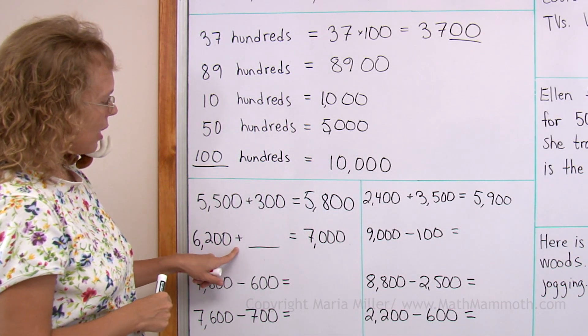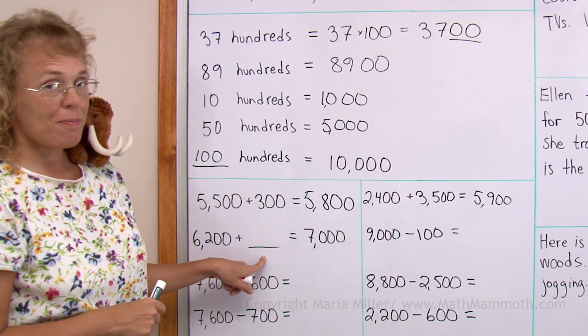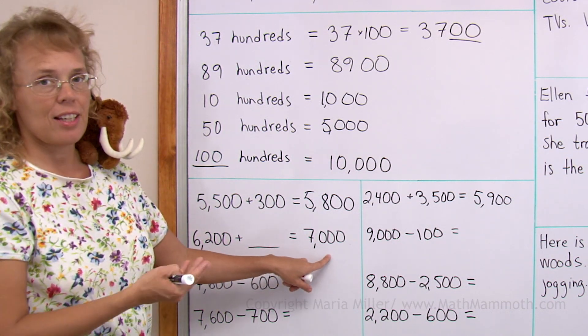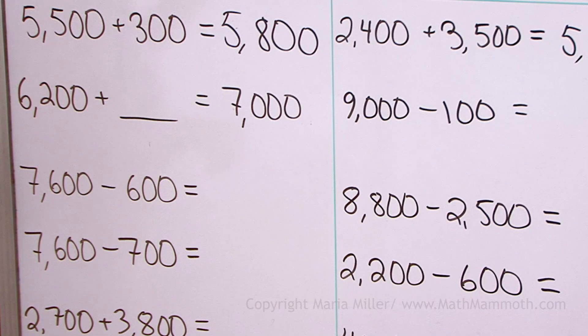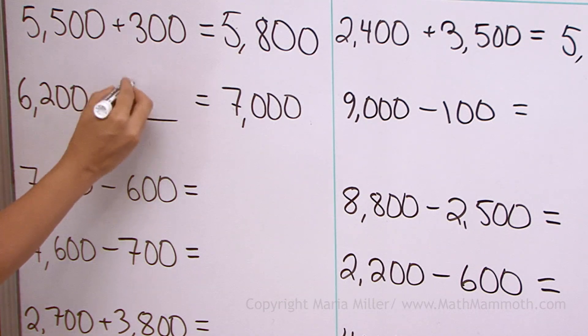6200 plus how many more makes 7000, the next whole thousand? I have 200 here. So 200 and what number makes 1000? Wouldn't it be 800, right?